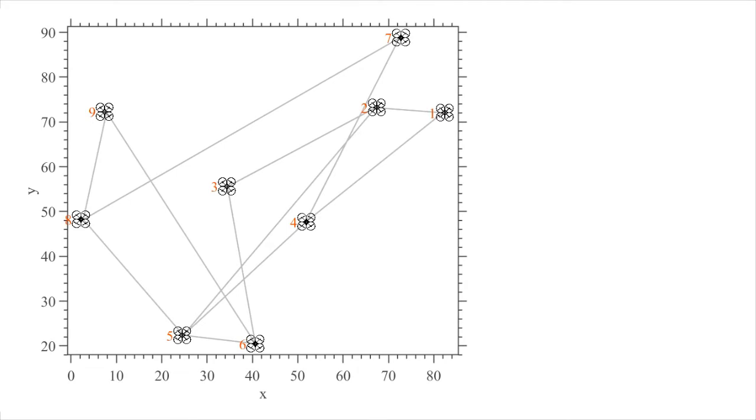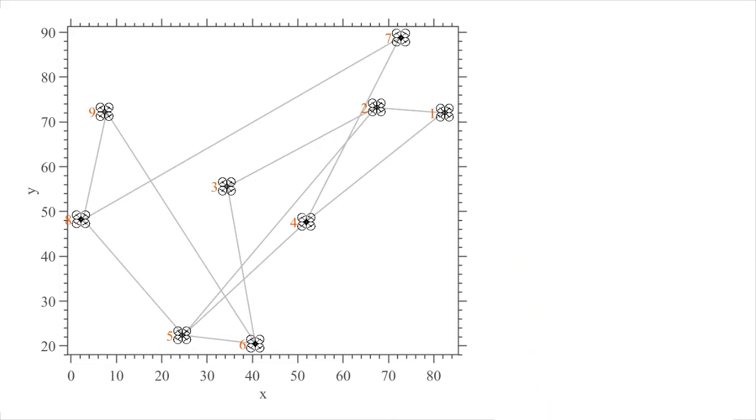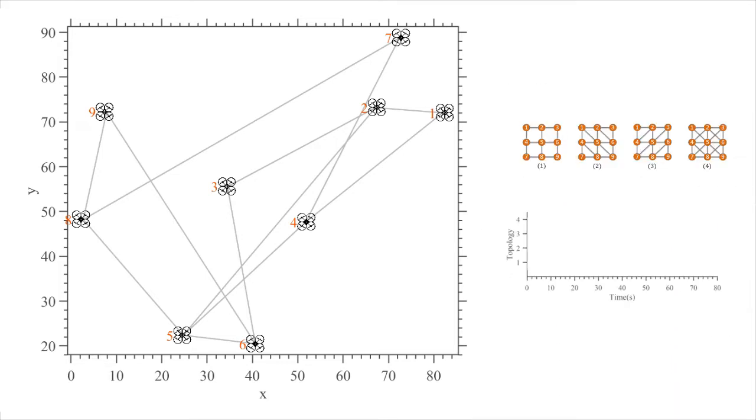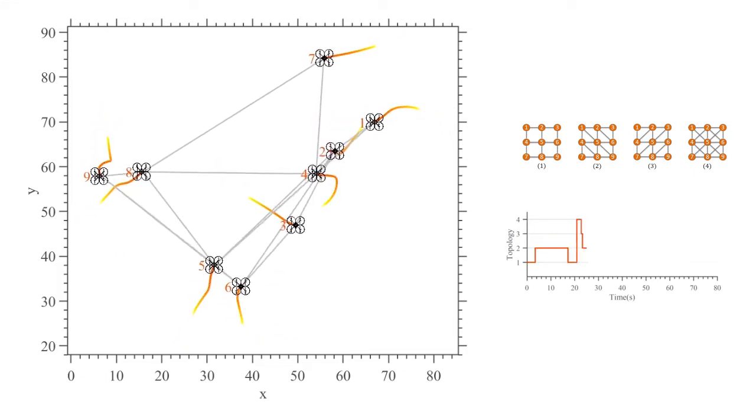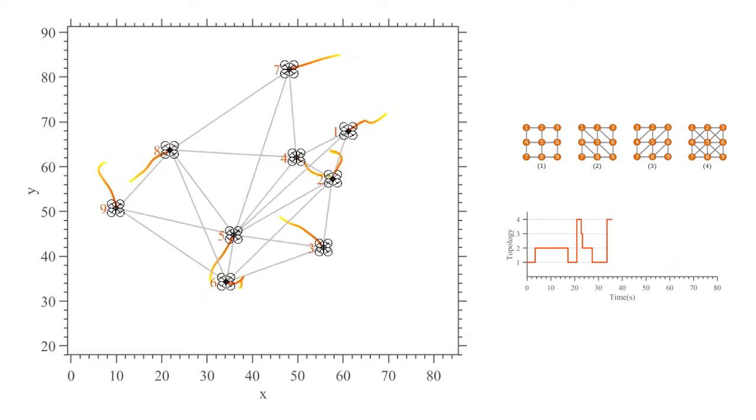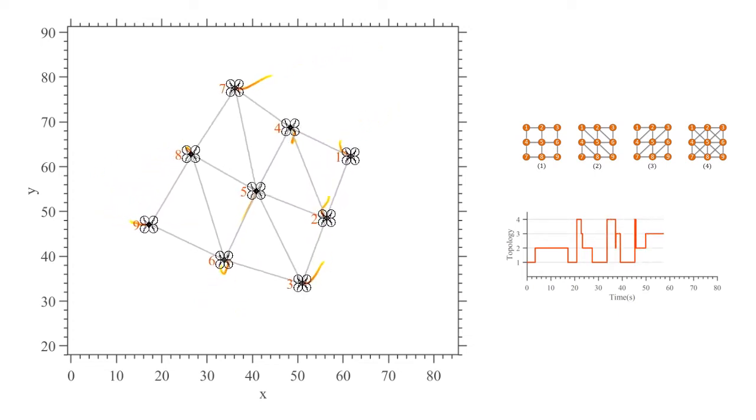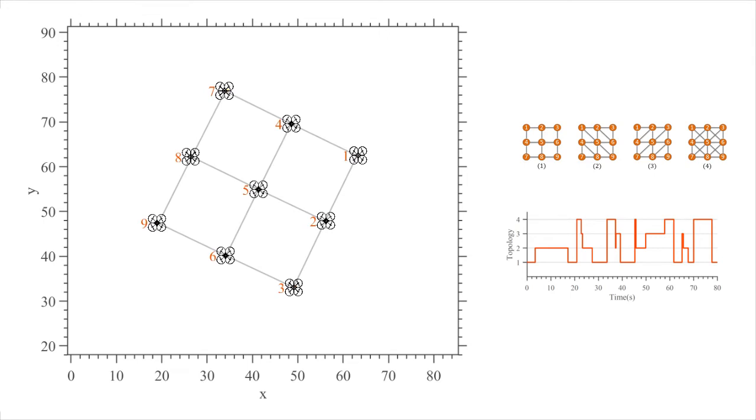As an example, we consider a simulation of nine quadrotors using their original nonlinear dynamics. The control is designed by using the linearized dynamics about the hover point. The quadrotors start from random initial positions and are kept at a constant altitude. Each quadrotor can measure the local relative position of its neighbors, as indicated by gray lines. The sensing graph switches at random instances of time. The desired formation is a square grid, which is achieved without any collisions.